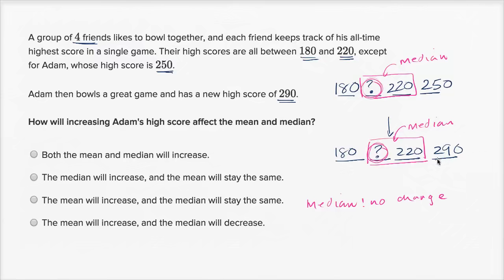So which sum is going to be higher? Well, the first three numbers are the same, but in the second list, you have a higher number. 290 is higher than 250. So if you take these four and divide by four, you're going to have a larger value than if you take these four and divide by four because their sum is going to be larger.